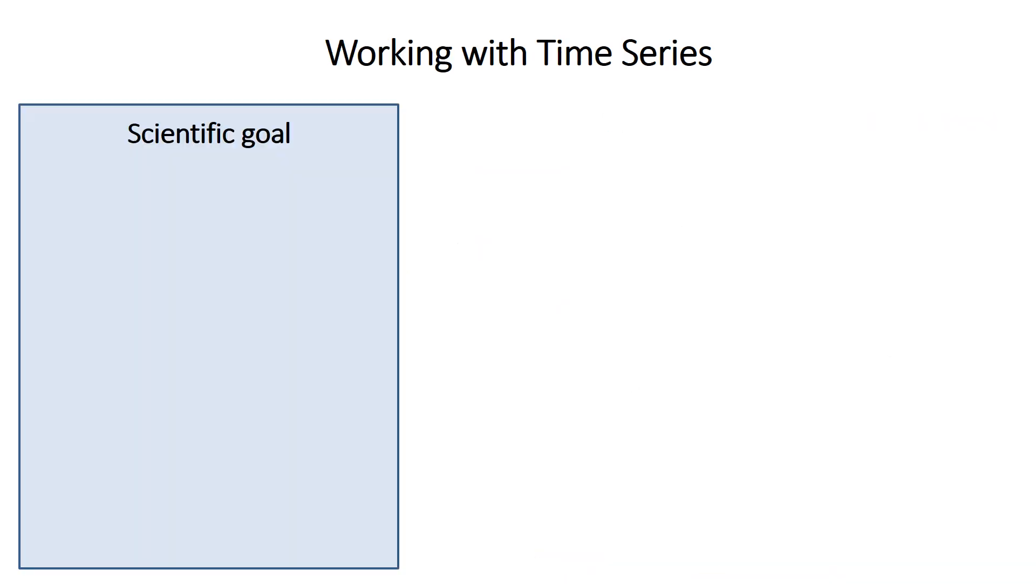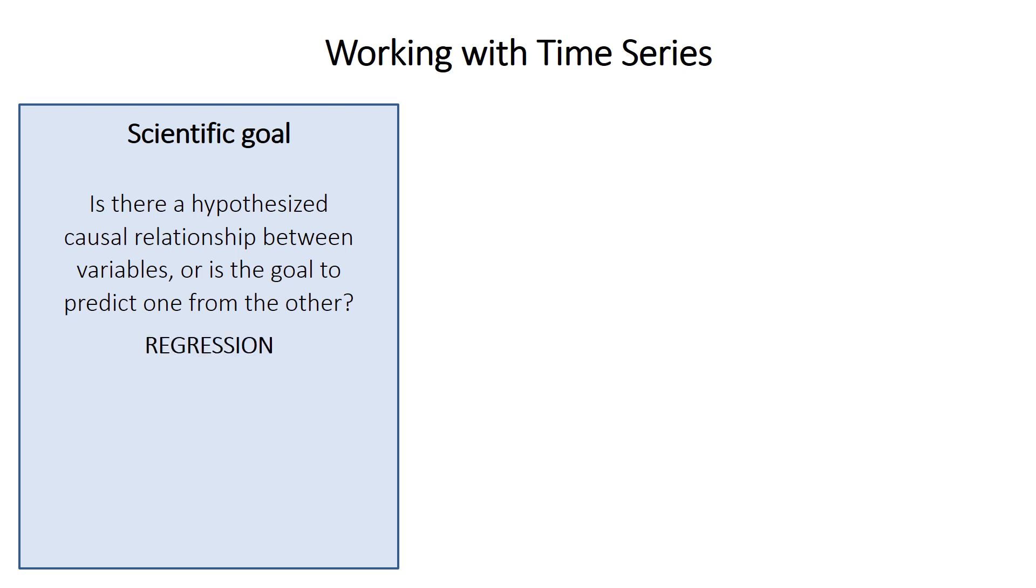So what should you do with time series beyond just doing differences? So the first step is to consider your scientific goal. So if you think there is a scientific reason why one variable should cause changes in the other, but not the reverse, or if your goal is to predict one variable from the other, but not the reverse again, then regression is probably appropriate. If you think there's just an association between the variables, perhaps they're both related to some external factor, then some kind of correlation is appropriate.